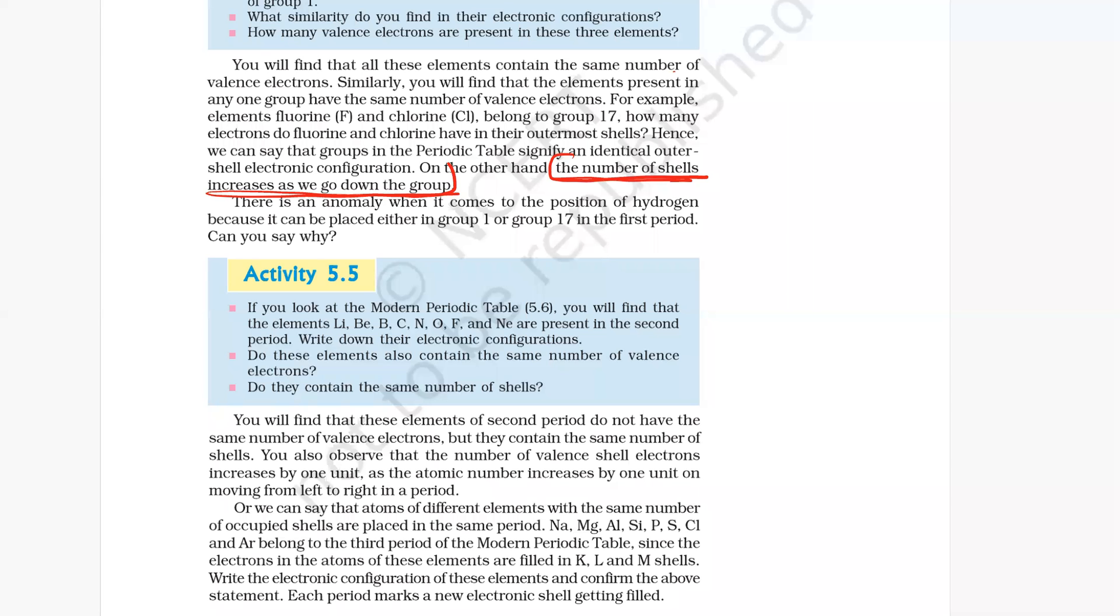Activity 5.5: If you look at the modern periodic table, you will find the elements lithium, beryllium, boron, carbon, nitrogen, oxygen, fluorine, and neon are present in the second period. Write down their electronic configuration.